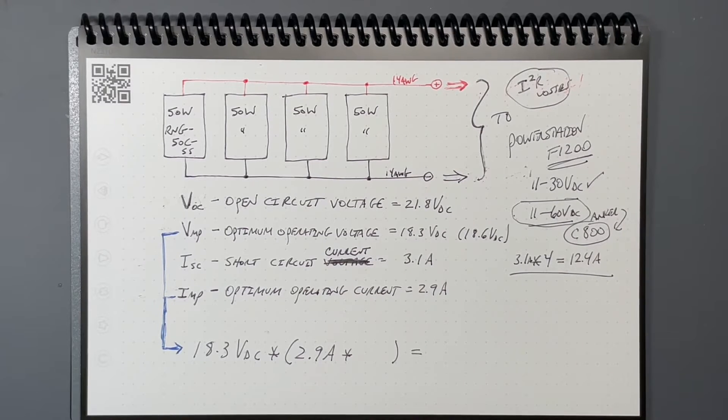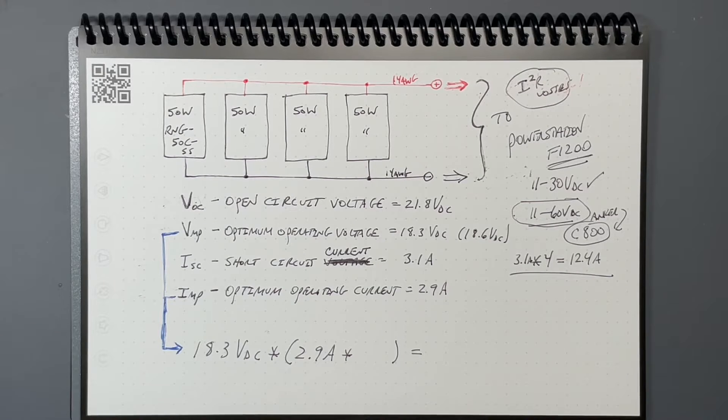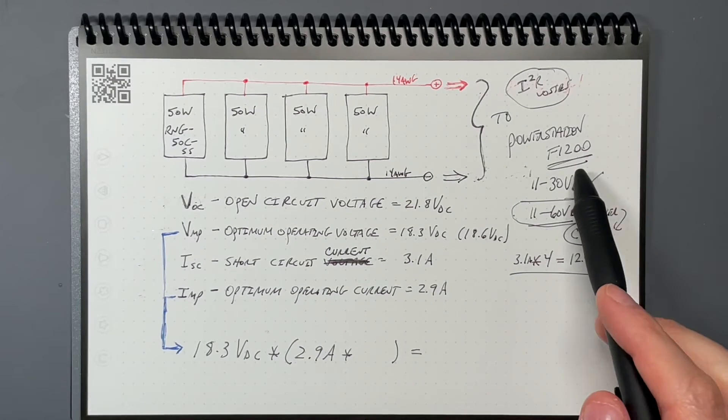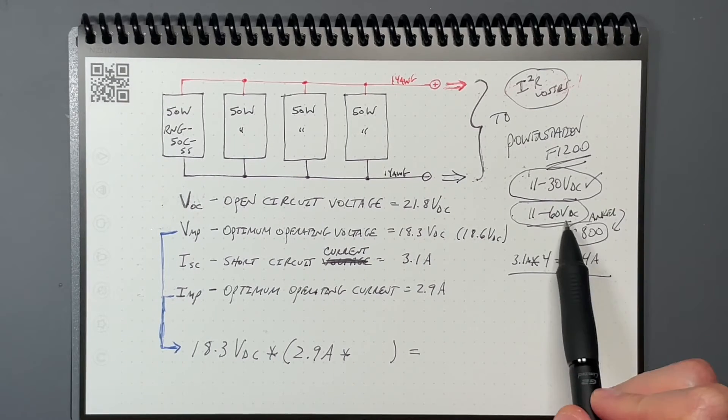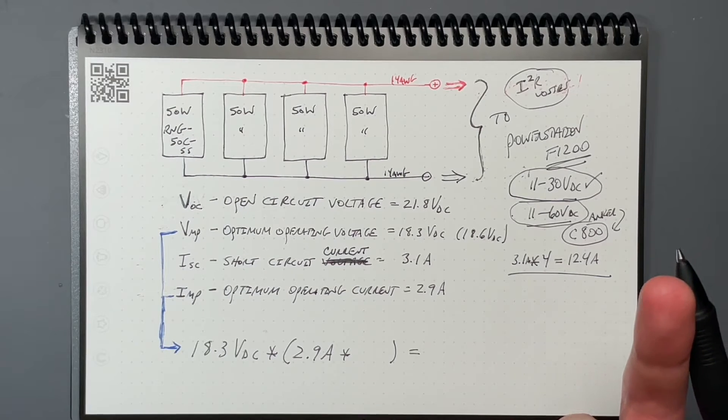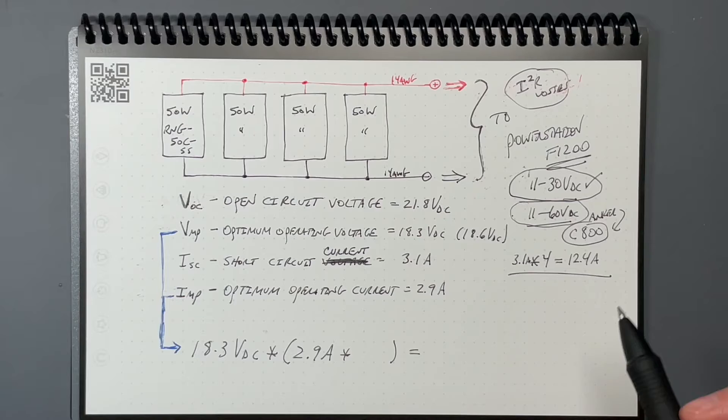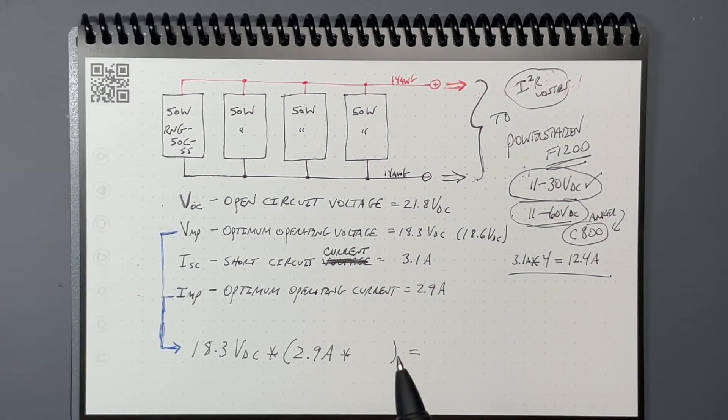These next things are actual things that I am pretty sure Anker has not resolved. If any of you have them and you have experienced that these things have been resolved, then please let me know in the comments. I've noticed that the pass-through charging results in a weird behavior with the 11 to 30 volt DC range at minimum. Perhaps when they made the change to 11 to 60 volts, they've resolved this.